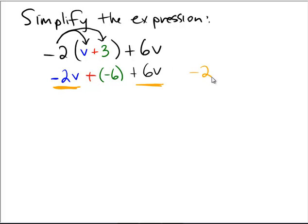I'm going to take their coefficients, negative 2 and 6. And when we take negative 2 plus 6, that's equal to the number 4.